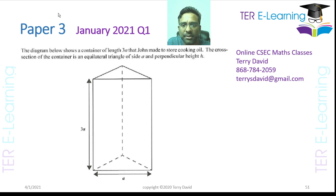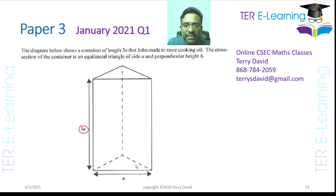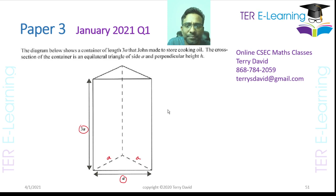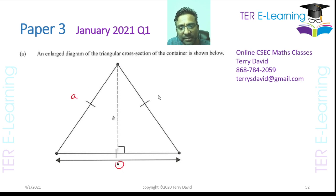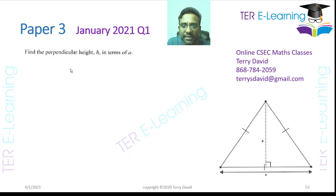The first question is a measurement question. The diagram shows a container of length 3e. The cross-section of the container is an equilateral triangle, so each side is e. They also give an enlarged diagram of the cross-section, showing all three sides are e, and a perpendicular height h.